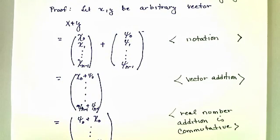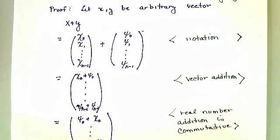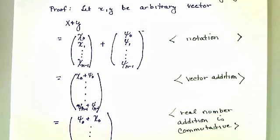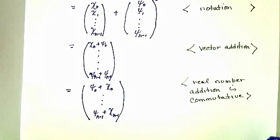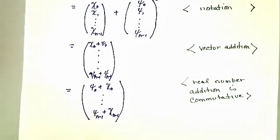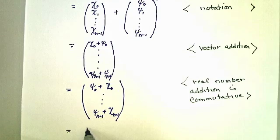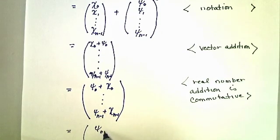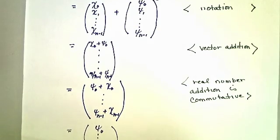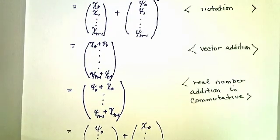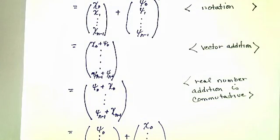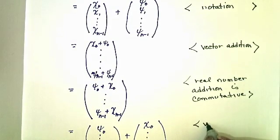But, this is actually by vector addition, working our way backwards, just the sum of two vectors. And those vectors would be the vector xi 0 and so on, xi n minus 1 plus chi 0 up to chi n minus 1. Again, that's just due to vector addition.